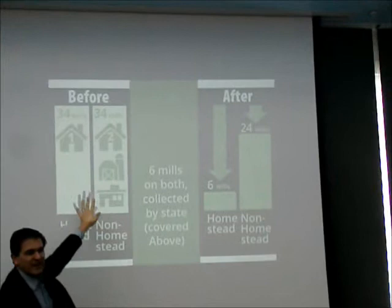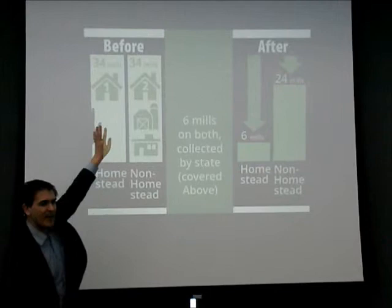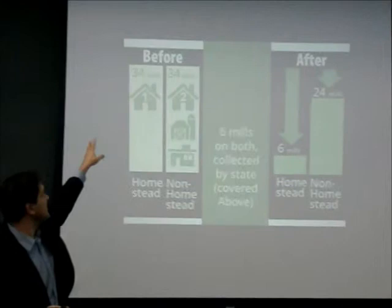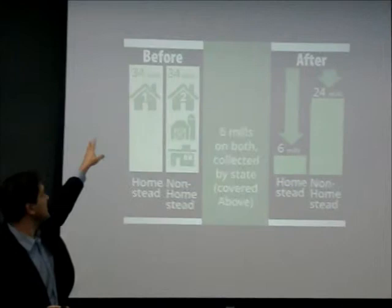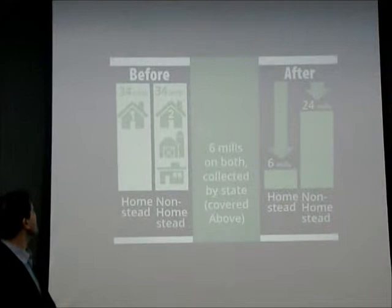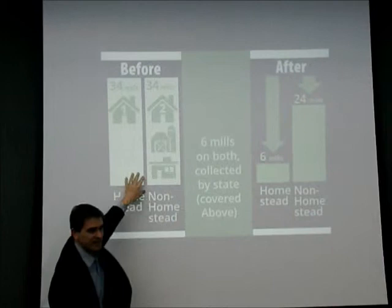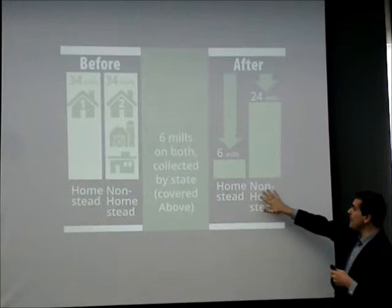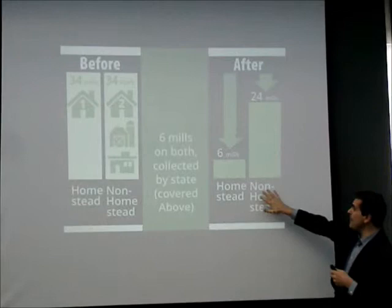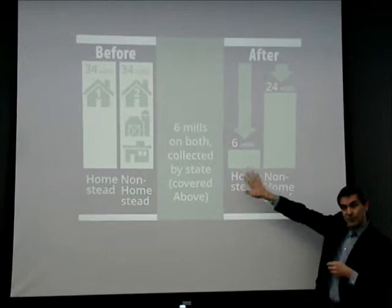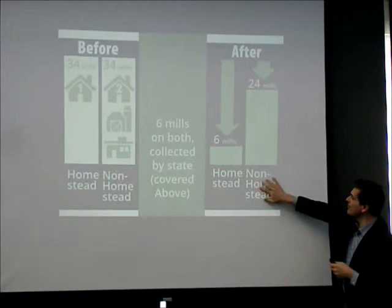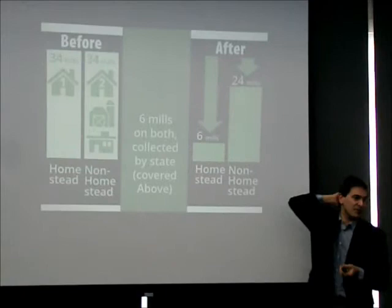Before Proposition A, two-thirds of all education funding was paid for with property tax — an average of about 34 mills on your property, meaning about $34 on every $1,000 of property value. In some districts it was considerably higher, in others lower. After Proposition A — which was precisely designed to reduce property tax — these dropped significantly. Six mills are levied on your homestead (your primary residence), and on non-homestead property, up to 24 mills. This was the property tax relief; we paid for it in other ways through sales tax, income tax, and other sources.